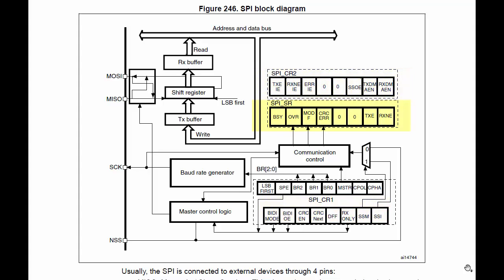There is also one status register which holds the status flags of various events that occur during SPI communication, like TX event, RX event, error event, etc. The clock is produced by the baud rate generator block, which is controlled by bits in the control register. We will talk more about these registers in the later videos.